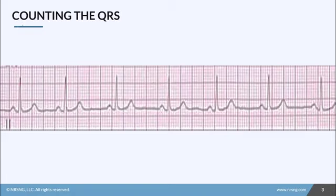The first method is called counting the QRS. On this method, you need to identify the marks above the strip because you want to make sure that you have a six-second strip.